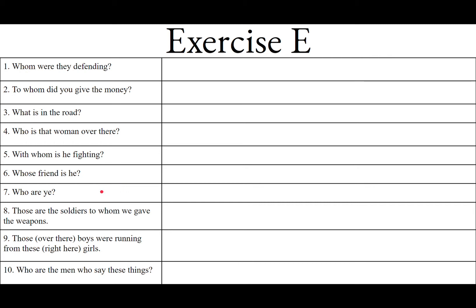Septima — sententia septima: Who are ye? Who are y'all? This needs to be plural because we know it's plural. 'Are ye' — 'ye are' — that's estis from sum, esse, fui, futurus: estis. We can't say quis estis — that's all kinds of wrong. The singular would be quis es — who are you, who art thou. The plural is qui: qui estis — who are y'all?